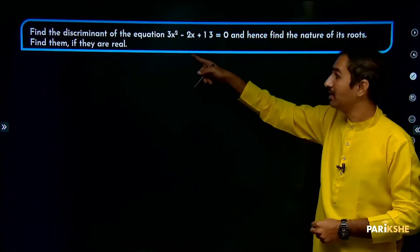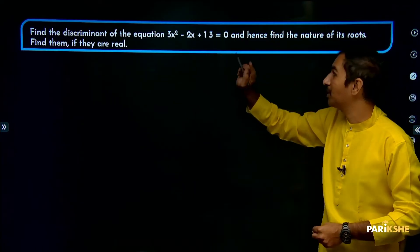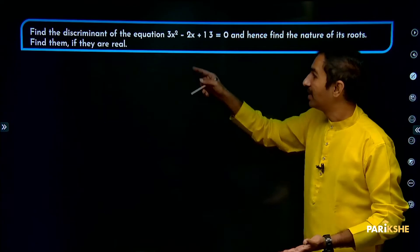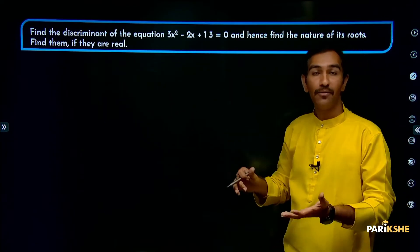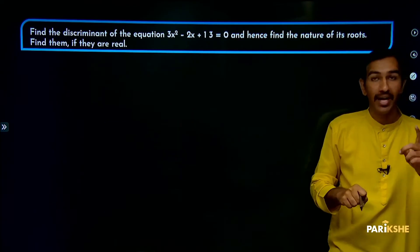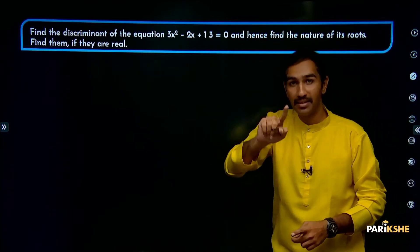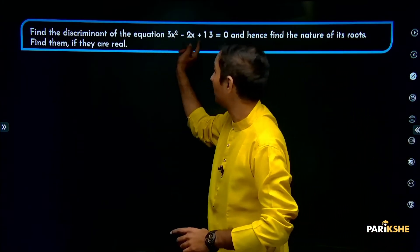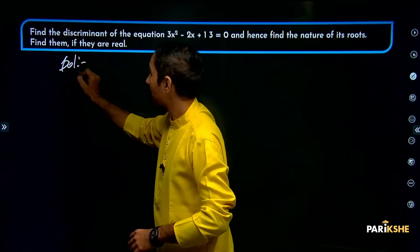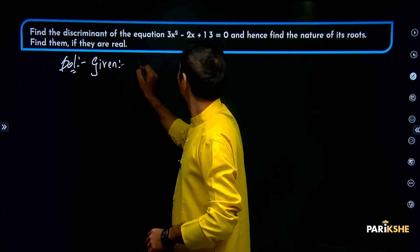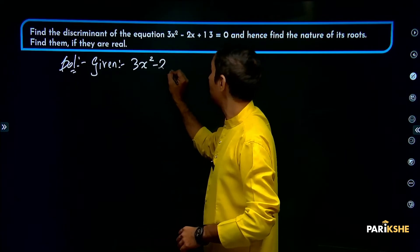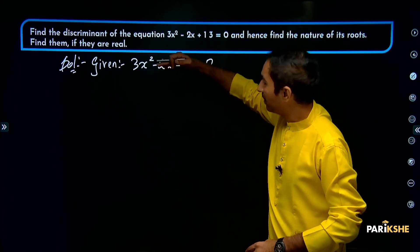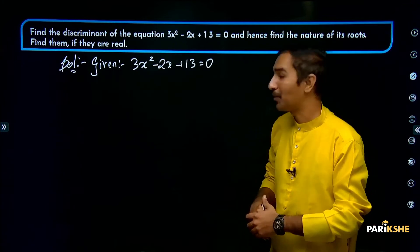Find the discriminant of the equation, and hence find the nature of the roots. Find them if they are real. Given: 3X square minus 2X plus 13 is equal to 0. Compare with the standard form AX square plus BX plus C equals 0.